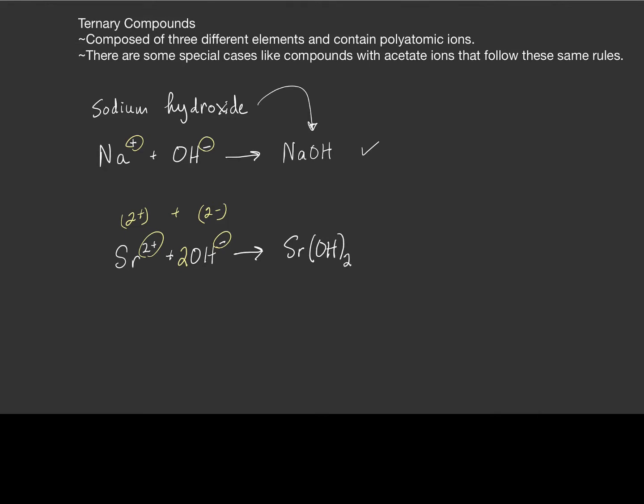Now you'll notice that we had to use, we had to put parentheses around the polyatomic ion. In this example up here we did not need parentheses because there was only one of the polyatomic ions. But when we have multiple polyatomic ions...